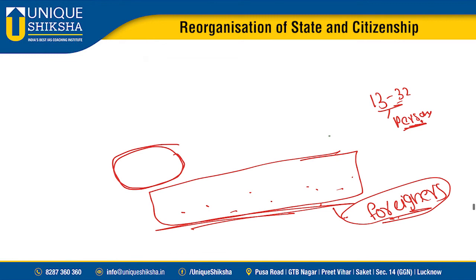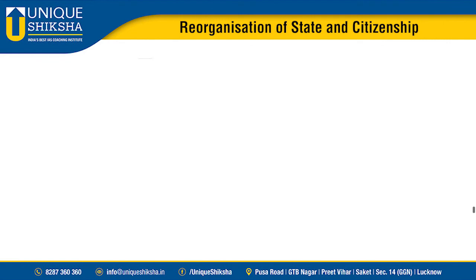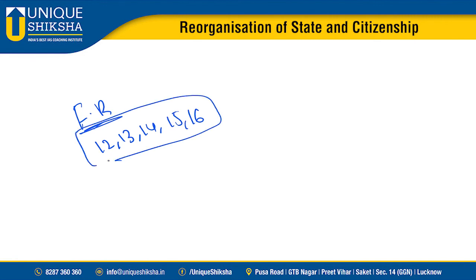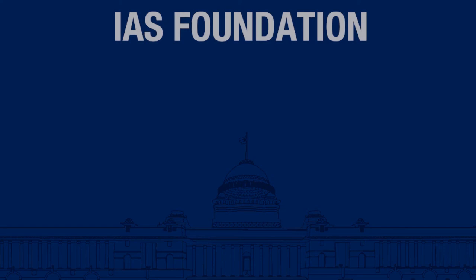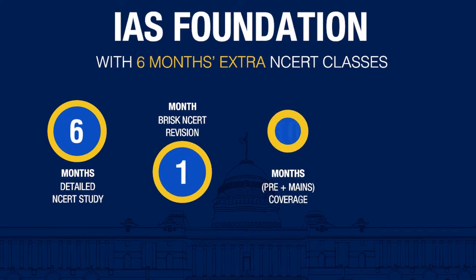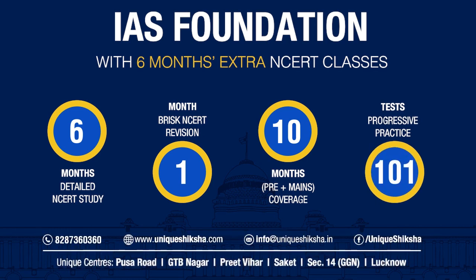In the next video I will start with fundamental rights. Considering the crash course and time limitations, I won't discuss all fundamental rights — I'll focus on Articles 12, 13, 14, 15, and 16, which students find slightly confusing. Then I'll discuss DPSPs, fundamental duties, and move to the Parliament chapter, followed by emergency provisions and other important topics. If you have confusion about other fundamental rights, please comment and I'll take those up in subsequent videos. Thank you, have a great day.